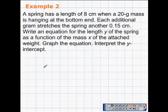We have example two here and we're talking about a spring that has a length of eight centimeters when a 20 gram mass is hanging at the bottom end. An additional gram stretches the spring another 0.15 of a centimeter. Write an equation for the length y of the spring as a function of the mass x of the attached weight. Graph the equation and interpret the y-intercept.